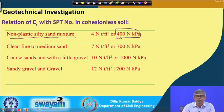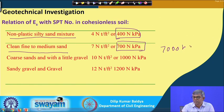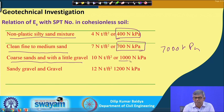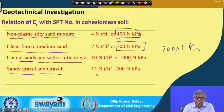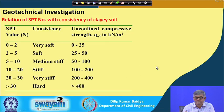For clean fine to medium sand, E = 700N kPa — so if N = 10, E = 7,000 kPa. For sandy sand with little gravel, E = 1000N kPa — so if N = 10, E = 10,000 kPa. For sandy gravel and gravel, E = 1200N kPa — so if N = 10, E = 12,000 kPa. These empirical equations come from researchers' accumulated experience.